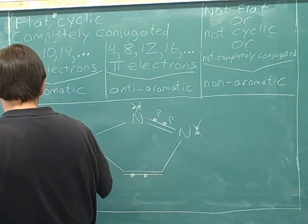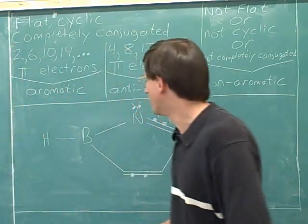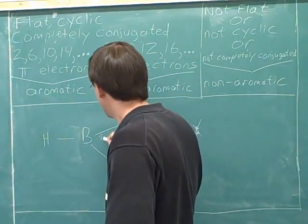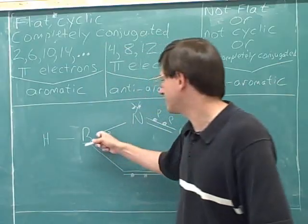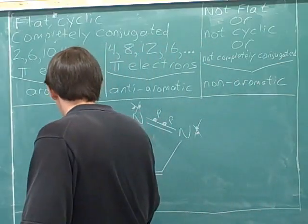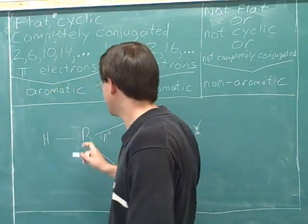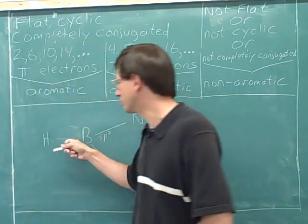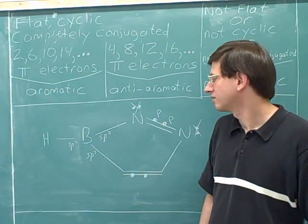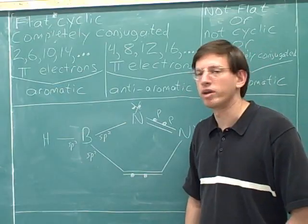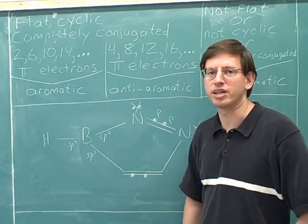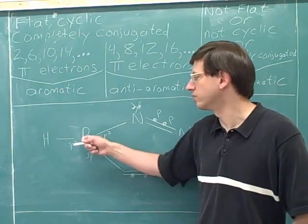All right. The boron is going to use an sp2 orbital for this sigma bond, an sp2 orbital for this sigma bond, and an sp2 orbital for this sigma bond. That means one p orbital, and again, there's nothing to put in that extra p orbital because there's no lone pairs.